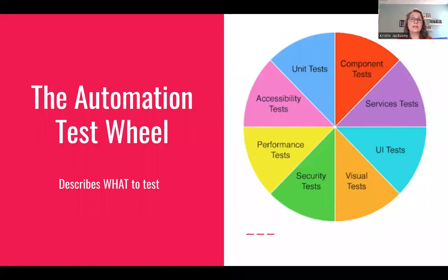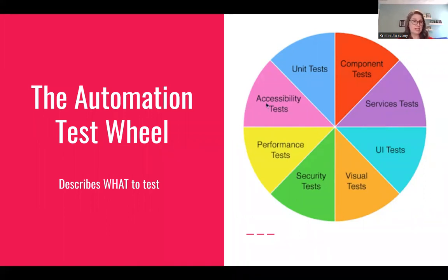The automation test wheel describes what to test. There are eight different sections of the wheel. Some will seem very familiar: unit tests, component tests, services tests, UI tests. But the wheel goes on to describe other very important tests: visual tests, security tests, performance tests, and accessibility tests. Today I'm going to go through each section of the wheel, explain what it is, and then talk about what kinds of automated tests we'd want to run for each area using a hypothetical application, putting it together into a little test plan.